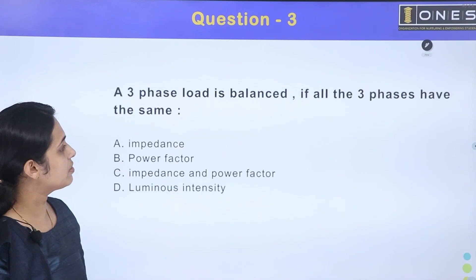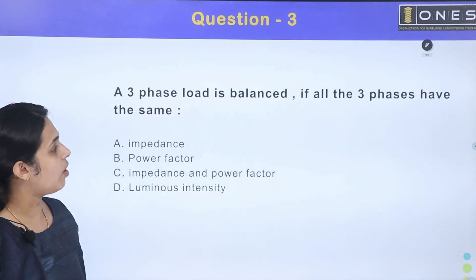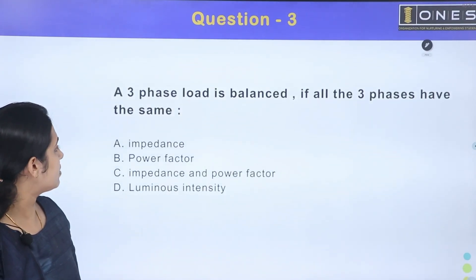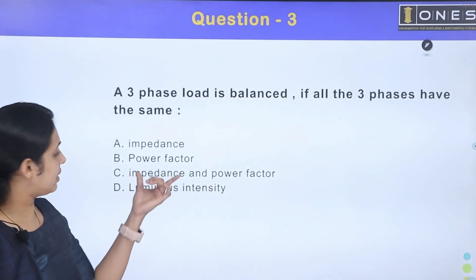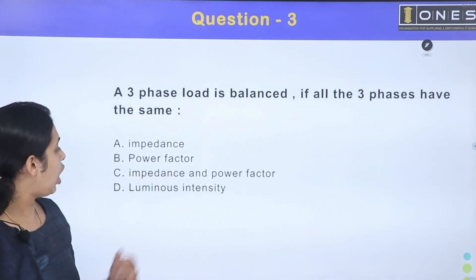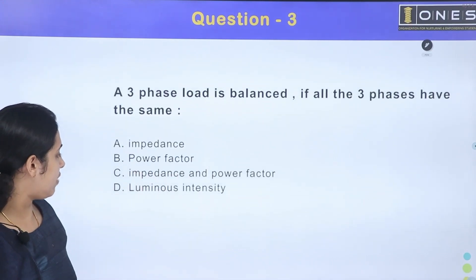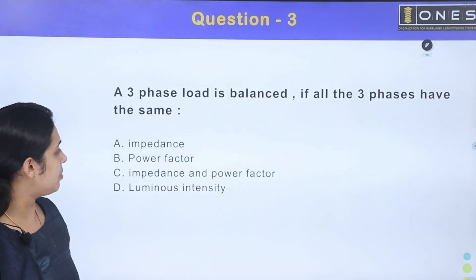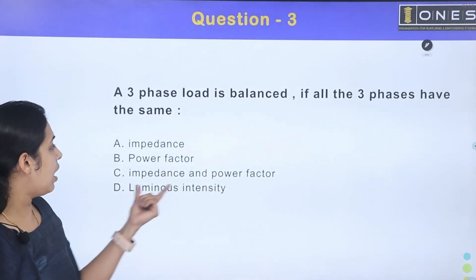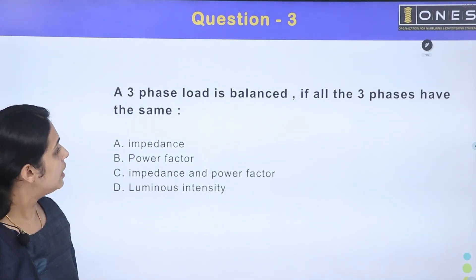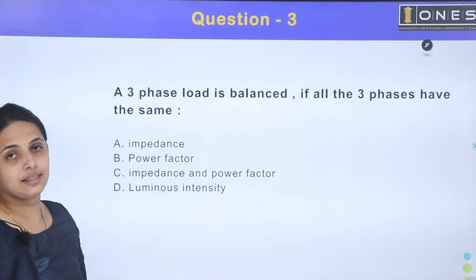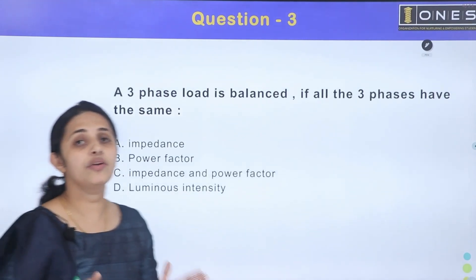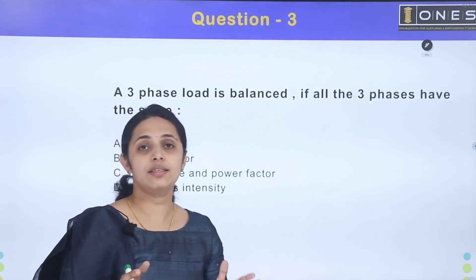Next question: A 3-phase load is balanced if all three phases have the same — option A: impedance, option B: power factor, option C: impedance and power factor, option D: luminous intensity.